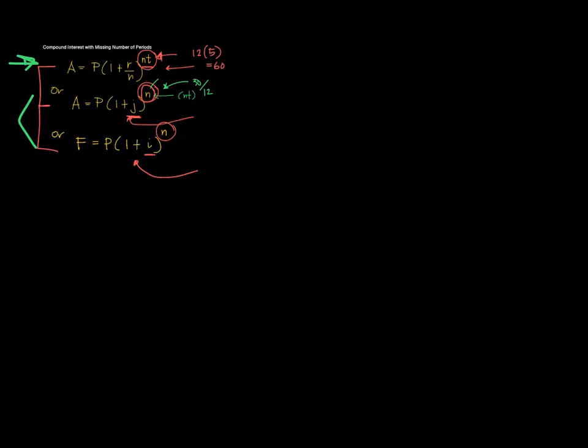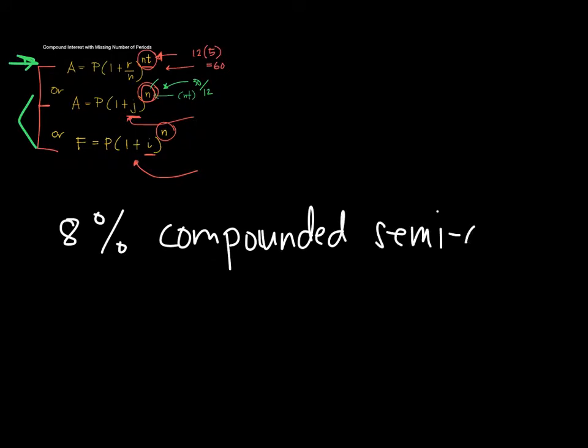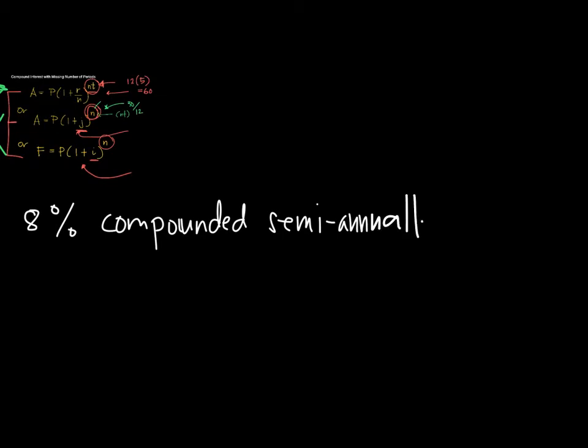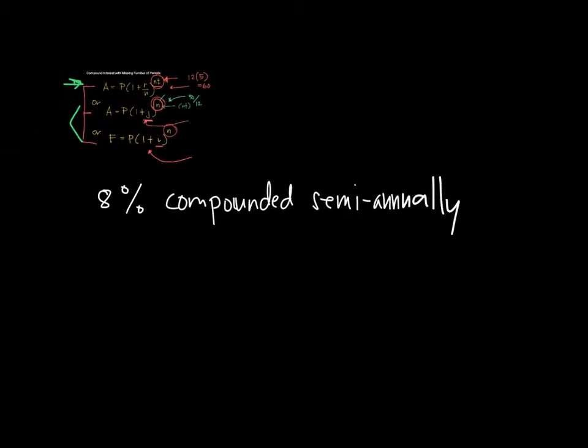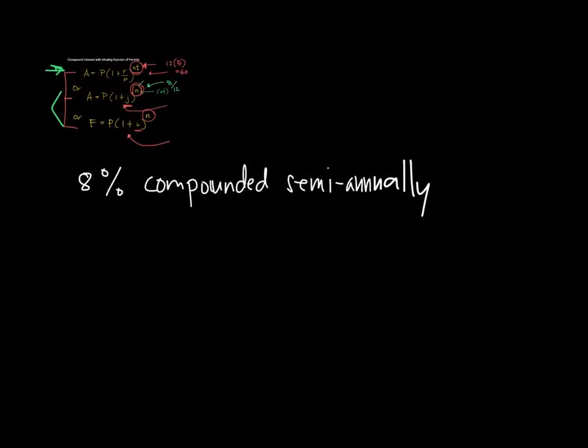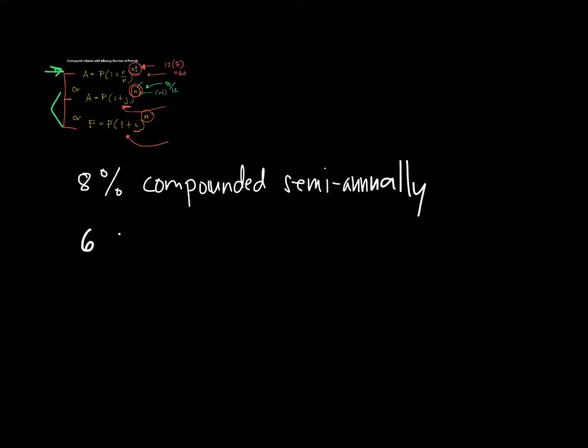So, let's suppose that a man invested a certain amount, so we don't know how much. But what we know is that he invested it at 8% compound interest and it is compounded semi-annually. Semi-annually means it's twice a year.